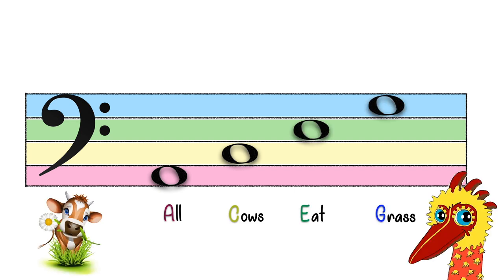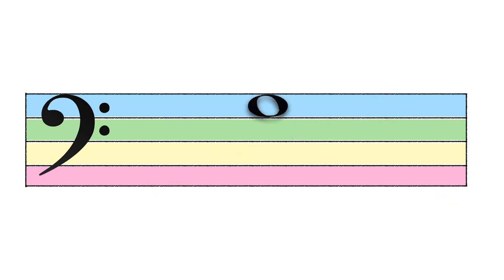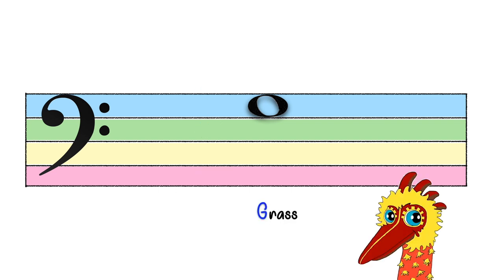Next up! For bass clef, space notes 1, 2, 3, and 4 uses All Cows Eat Grass as the acronym. All Cows Eat Grass. Got it! Try this! Recognize the clef and use the correct acronym. All Cows Eat Grass. It's a G! Well done!